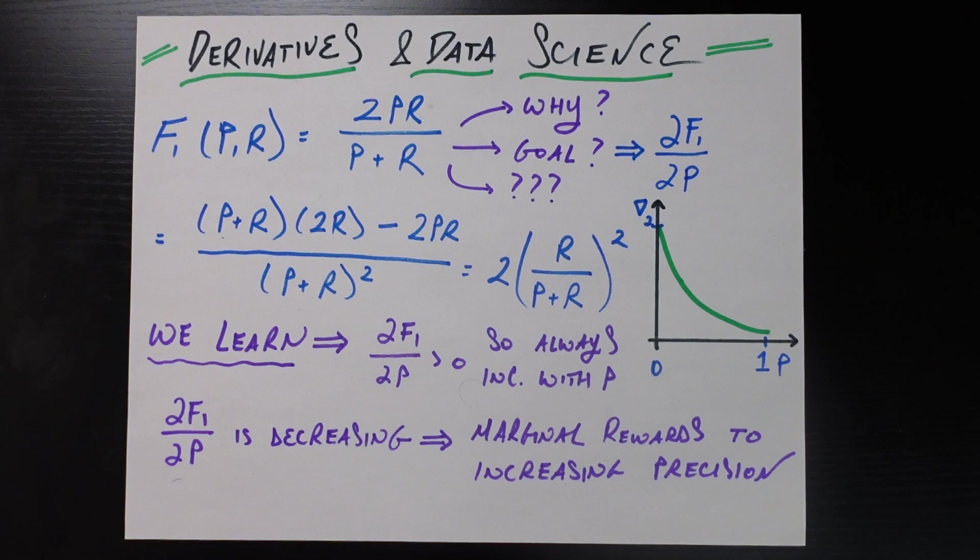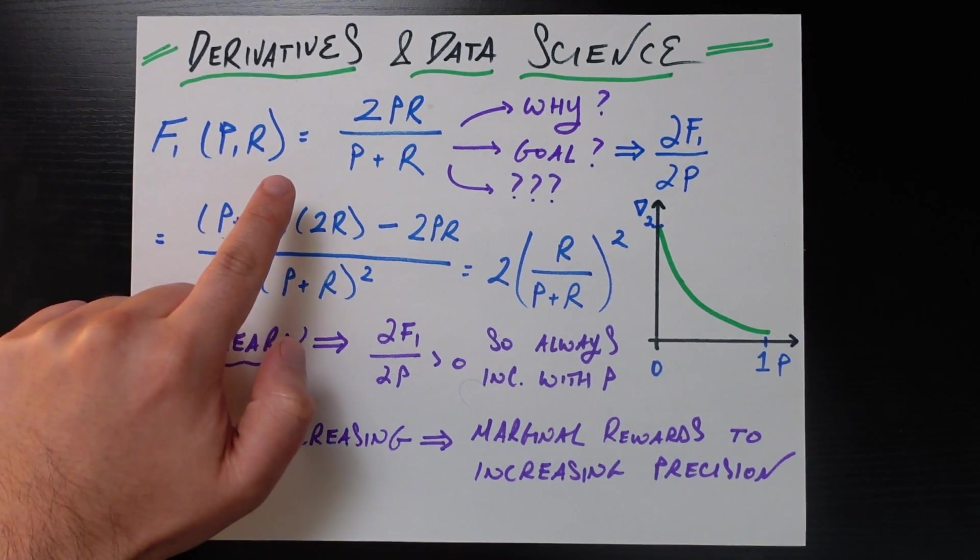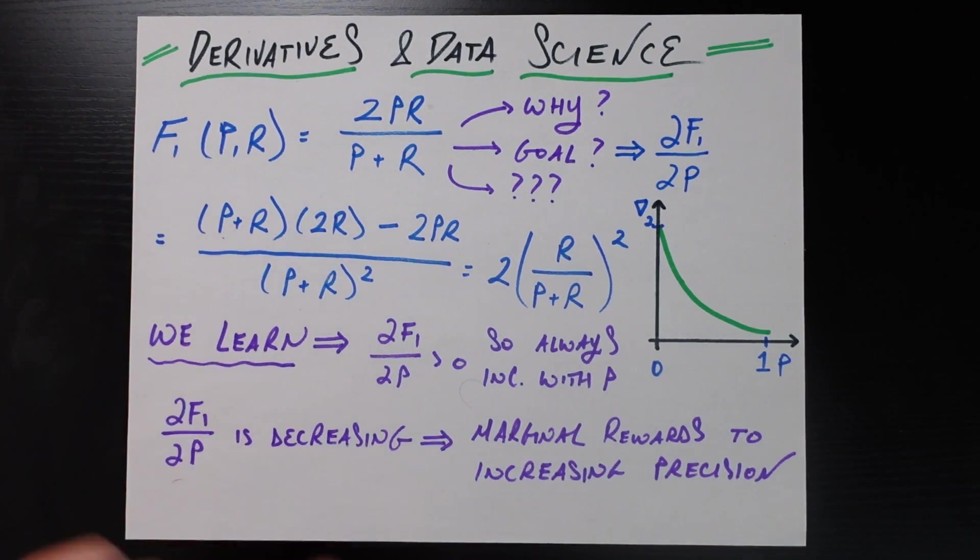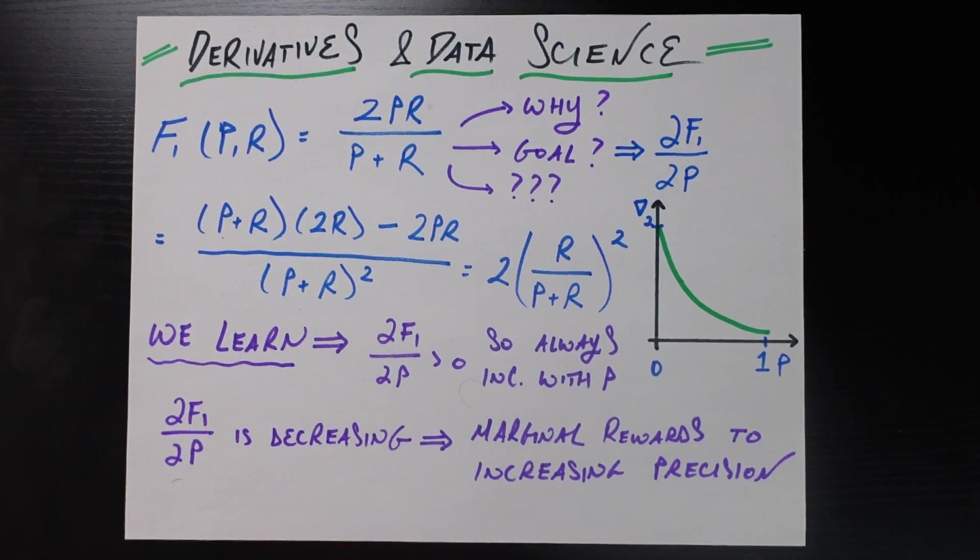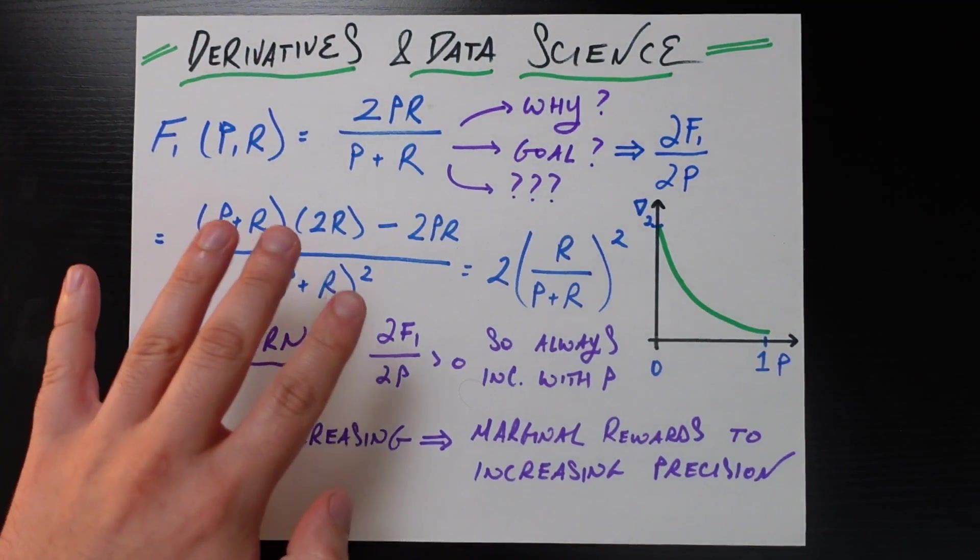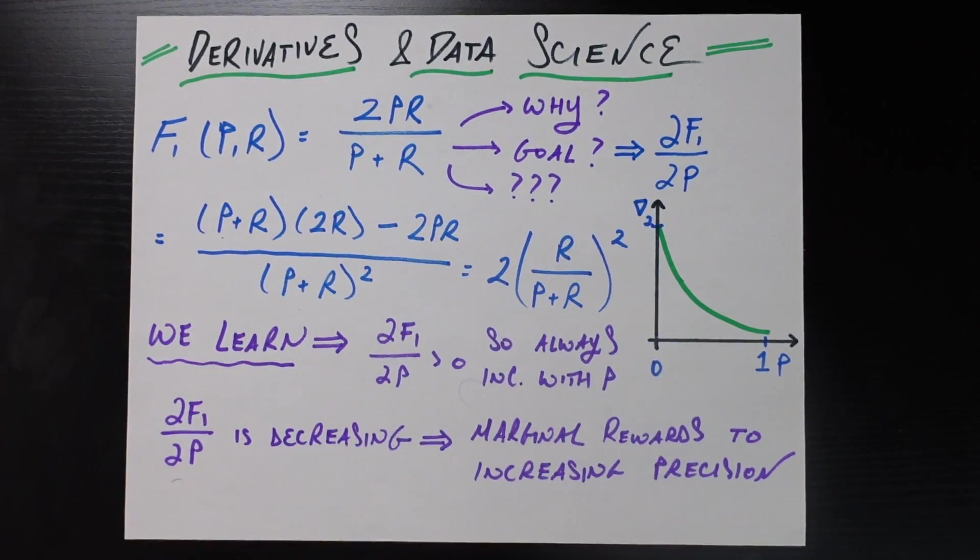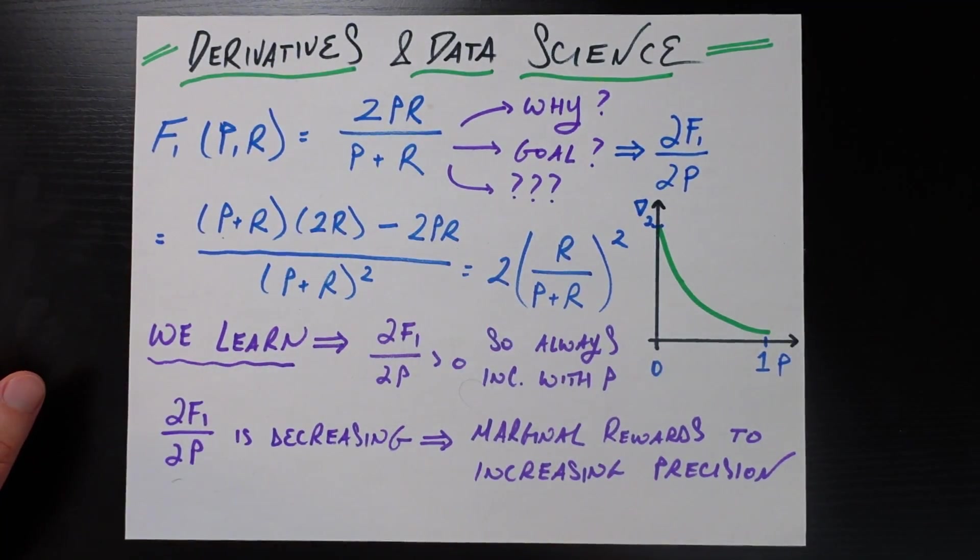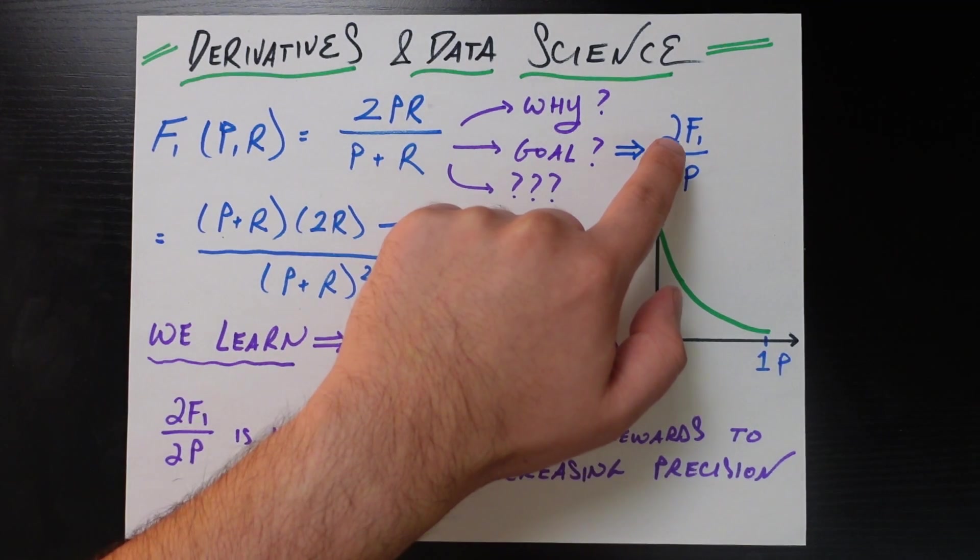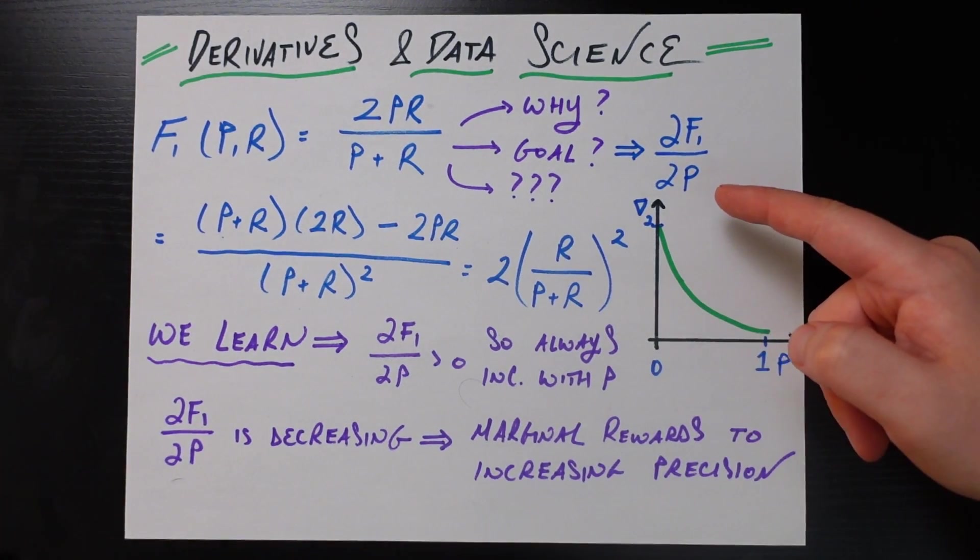Now counter-intuitively, to understand this, one of the best, one of the most productive things we can do is actually fall back on our calculus and take the derivative of this mystery function with respect to all of its arguments. So for the sake of this video and because it doesn't matter if we do precision or recall, you'll notice it's symmetric with both. So we'll just take the derivative of this F1 score with respect to precision.